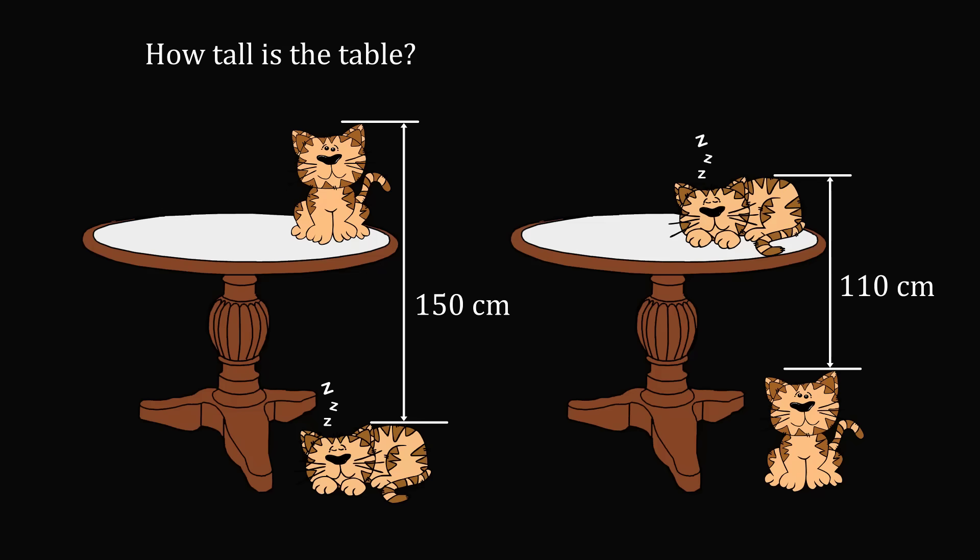The question is: how tall is the table? At first glance, this problem seems quite impossible. How can you figure out the height of the table from the distances given? You don't know the height of the sitting cat or the height of the sleeping cat. So how does this all work out?